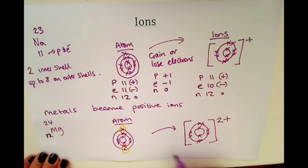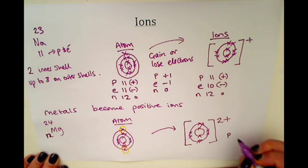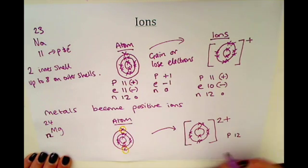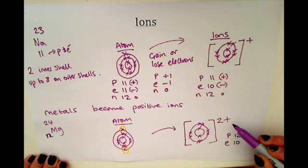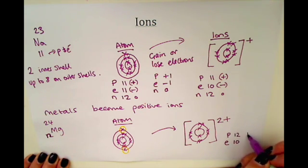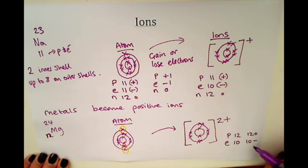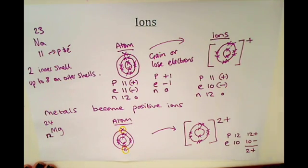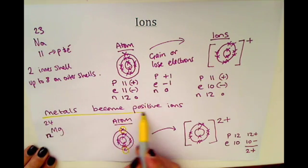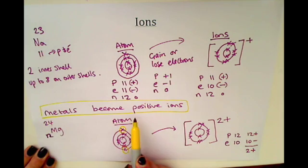Because magnesium loses two electrons it's losing two negative charges, so it becomes a two plus ion. It still has 12 protons from the proton number, but it has lost two electrons - it used to have 12 but now only has 10 electrons. So that gives 12 positives and 10 negatives, leaving two pluses overall - a two plus ion. That makes sense because metals always become positive ions.